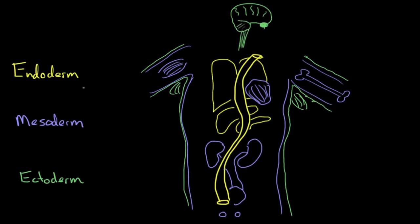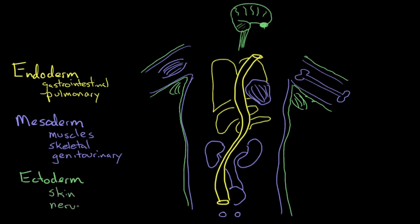So just to recap, the endoderm forms our gastrointestinal and pulmonary systems, including the lungs, gastrointestinal tract, liver, and pancreas. The mesoderm forms our muscles, including the heart muscle, our skeletal system, and our genitourinary tracts. And the ectoderm forms our skin and related structures along with our nervous system. Well done.